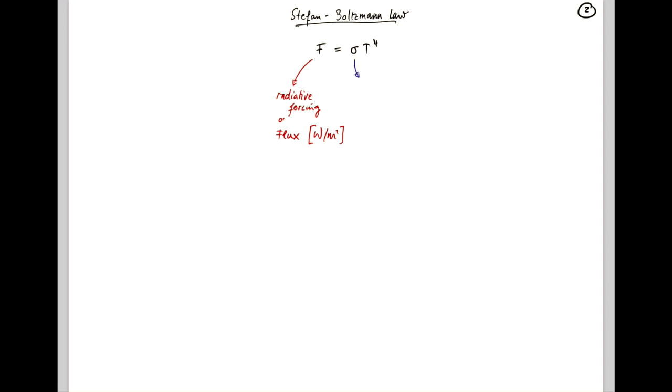Sigma is known as the Stefan number and it is quite easily remembered because 5,6,7,8. So sigma is given as 5,6,7 times 10 to the minus 8 watts per meter squared per Kelvin to the power of 4. Now T is the surface temperature of the body that is emitting this energy and it is measured in Kelvin.